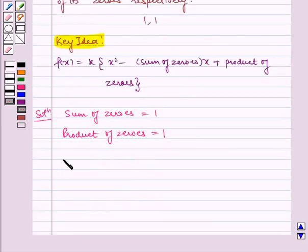Now, using our key idea, let us frame our polynomial. That is f of x equals k into x square minus sum of zeros is equal to 1, so minus x plus product of zeros is also equal to 1.